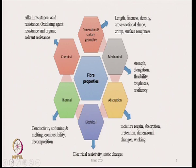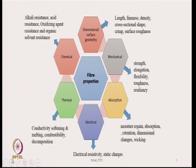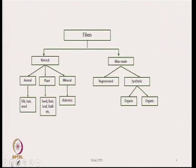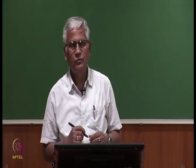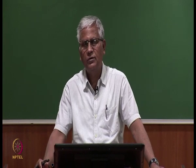Electrical properties include electrical resistivity and static charge generation. Thermal properties include conductivity, softening and melting temperatures, combustibility, decomposition temperatures, and behavior under sun rays. Chemical properties include resistance to alkali, acid, oxidizing agents, and organic solvents. A fiber as a basic raw material has so many different types of properties, and we must be aware of them; otherwise, we may select a fiber that may not perform properly for a given product.